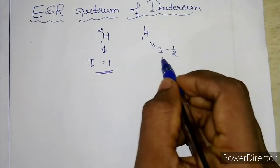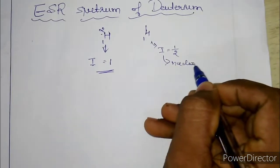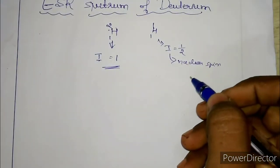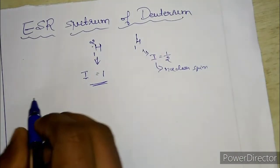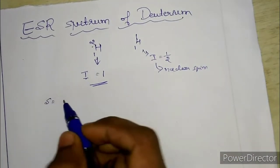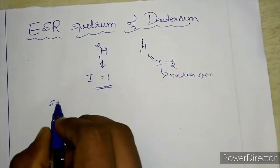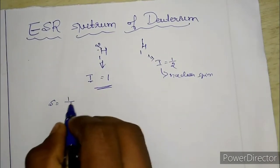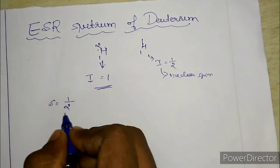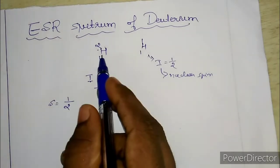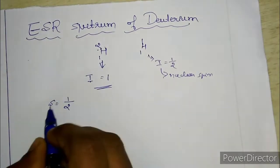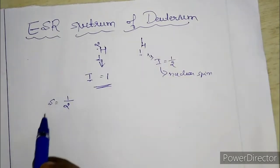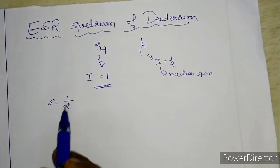I is nothing but the nuclear spin — the spin of the nucleus. Now what is the S value? S is the spin. Deuterium has one unpaired electron, so S is equal to 1/2. S is equal to 1/2 for both hydrogen as well as deuterium, as each has only one electron.